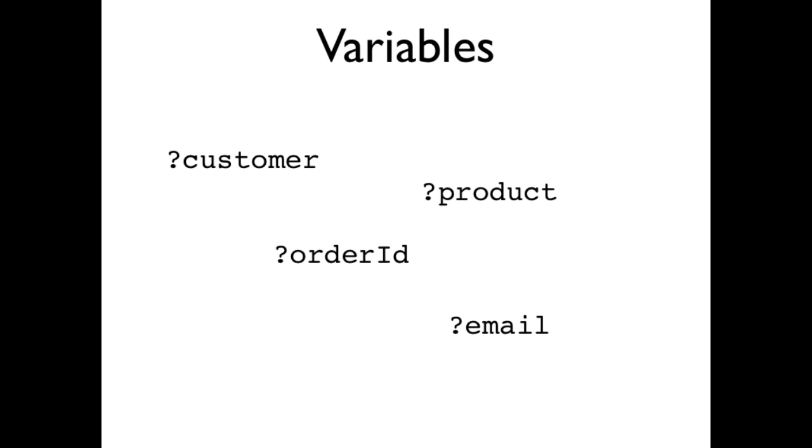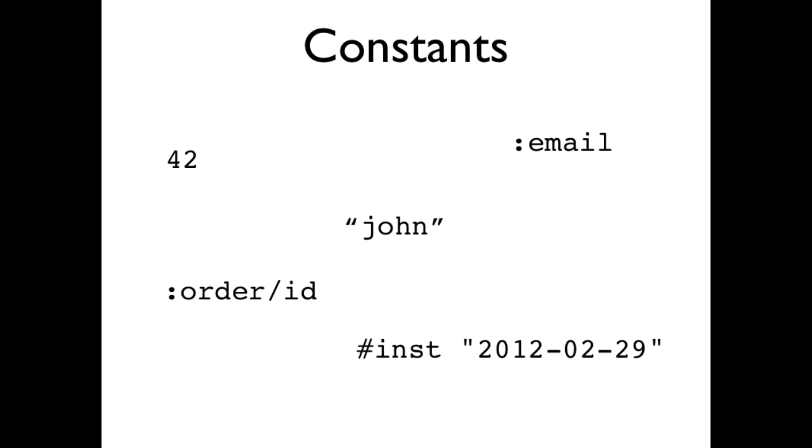A variable name begins with a question mark, followed by name characters. The set of name characters is a superset of legal Java names. Constants are the usual suspects: booleans, integers, floating point numbers, and strings. In addition, there are keywords. Keyword names begin with a colon and are used to name programmatic objects, in particular, attributes in the database. Keywords can have a namespace component separated from the name by a forward slash. Constants also include other commonly used data structures such as instants in time, URIs, and UUIDs.